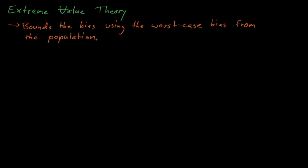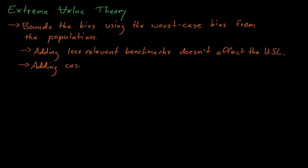This approach has the helpful side effect that adding benchmark experiments that have a less extreme bias pretty much does not affect the USL. Rather than trying to identify similar benchmark experiments or worrying about similarity metrics, we can simply consider every single benchmark experiment available. Adding more experiments to the pool cannot hurt our USL calculation. It can only make the USL more conservative.